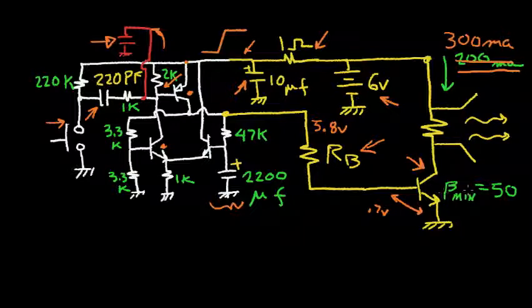So since the beta min is 50, I can calculate the base current that I need to drive this NPN into saturation. And so if I divide 300 milliamps by 50, I get the base current, which is 6 milliamps.